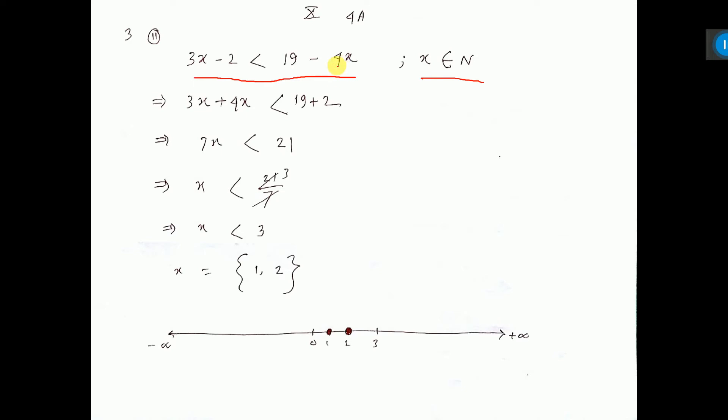So this 4x you take in the left hand side, minus will be plus. 2 you take this side, this minus will be plus. So 19 plus 2 is 21 and 4 plus 3 is 7x. This 7 will go down, that is 21 by 7, that is 3.